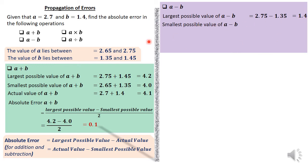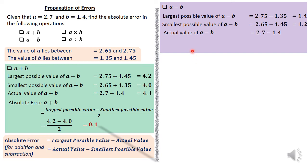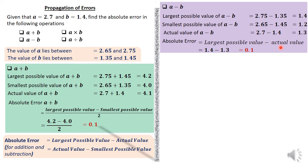The smallest possible value is 2.65 minus 1.45, because to get the smallest difference we use values closest to each other — the smallest of A and the biggest of B — giving 1.2. The actual value is 2.7 minus 1.4, which equals 1.3. Therefore the absolute error is the largest possible value minus the actual value: 1.4 minus 1.3, which equals 0.1.